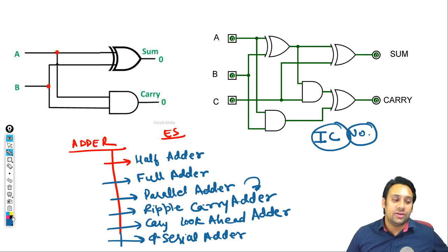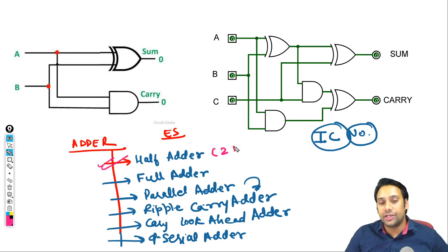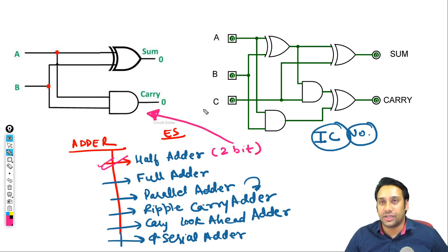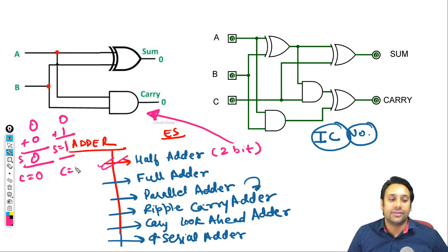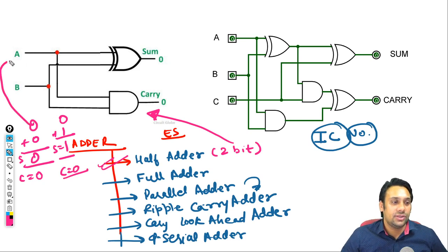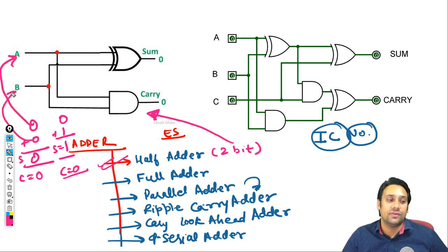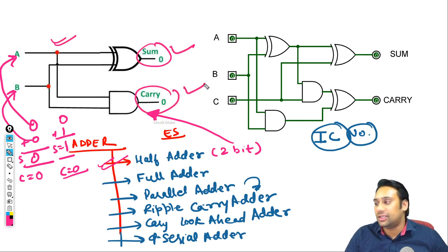First of all, there was the half adder — a half adder is used to add 2 bits of information. This diagram is representing your half adder. If you have 0 plus 0, then sum is 0 and carry is 0. If you have 0 plus 1, then sum is 1 and carry is 0. So this is representing your half adder.